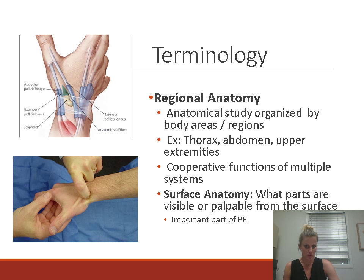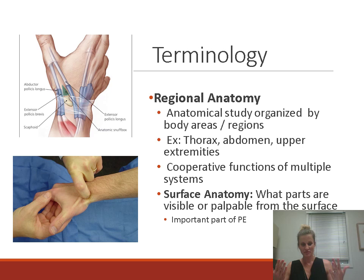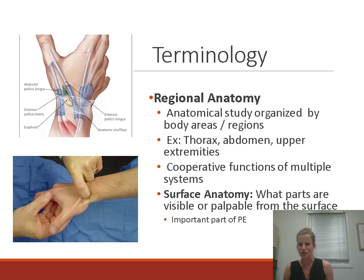Part of regional anatomy is surface anatomy. Surface anatomy looks at the parts actually visible from the outside — the parts you can see or palpate from the outside of the body. This is a very important part of your physical exam. When you do a physical exam, you're going to observe the patient, look at them, touch them, and palpate for lymph nodes, swelling, tension, or pain. You can't complete an adequate physical exam without good knowledge of surface anatomy.